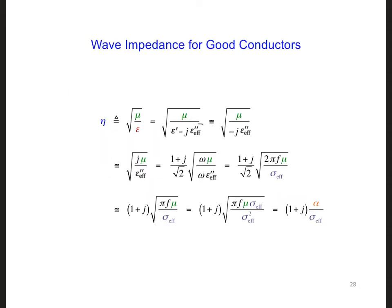So here, if this term dominates, then we can just ignore that one and we use an about equal to sign here. And once you simplify it, which is shown out here in detail, we get 1 plus j alpha over sigma.